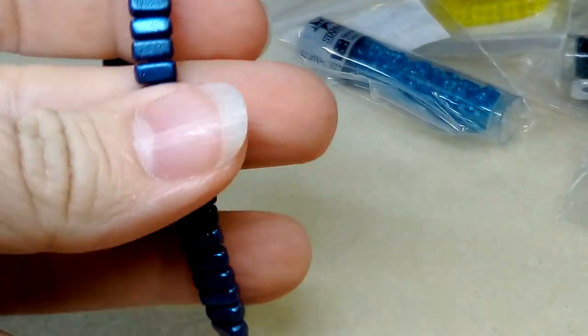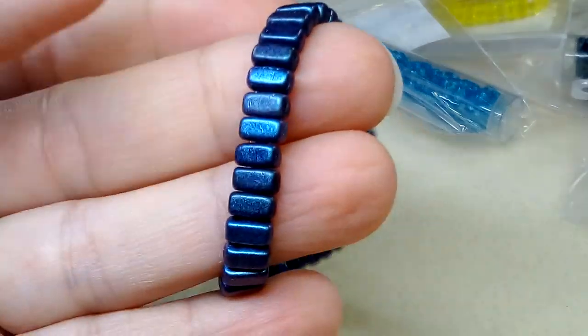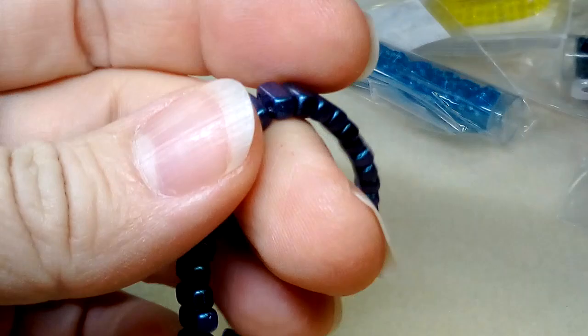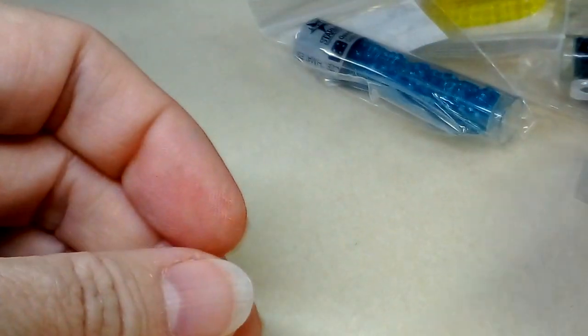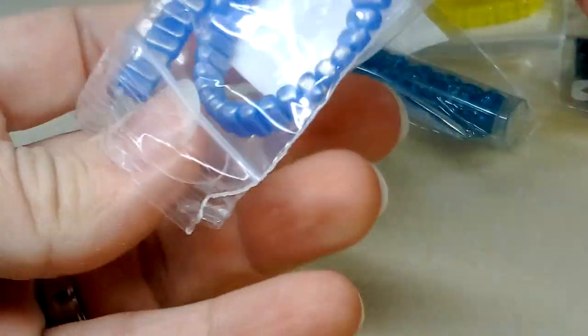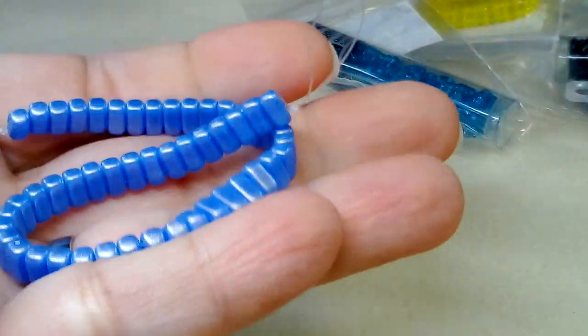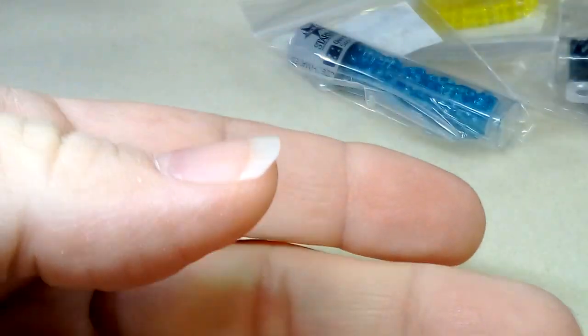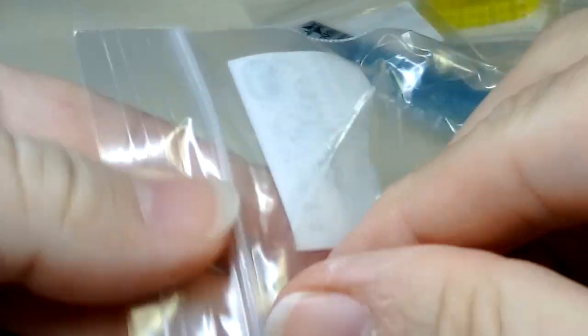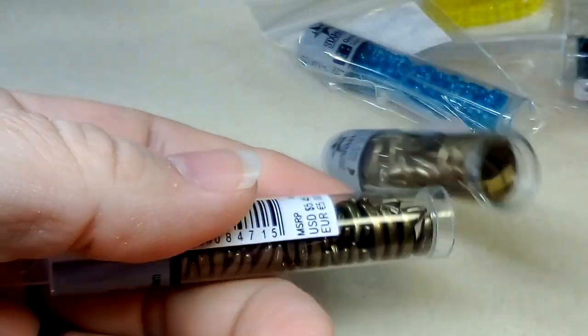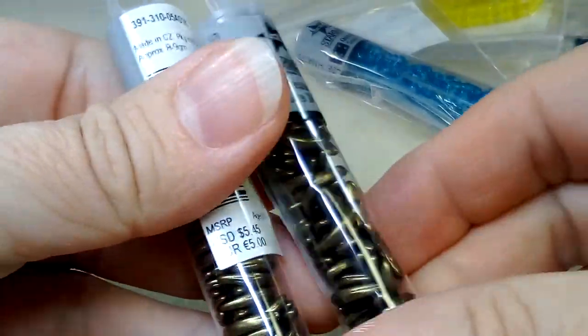This has got to be teal of some sort. Polychrome indigo orchid, that's a lovely name. It's so beautiful. We've got suede gold again. Opaque baby, it's probably baby blue.